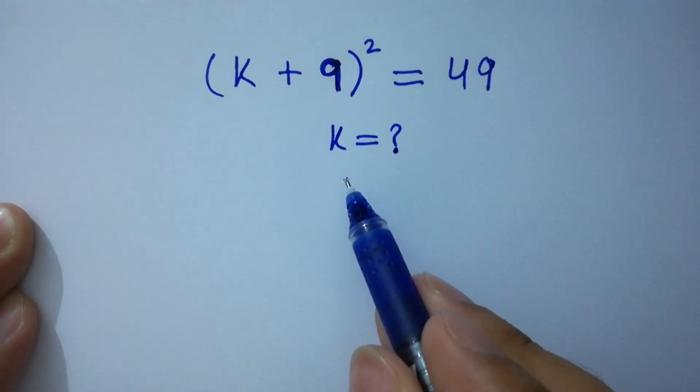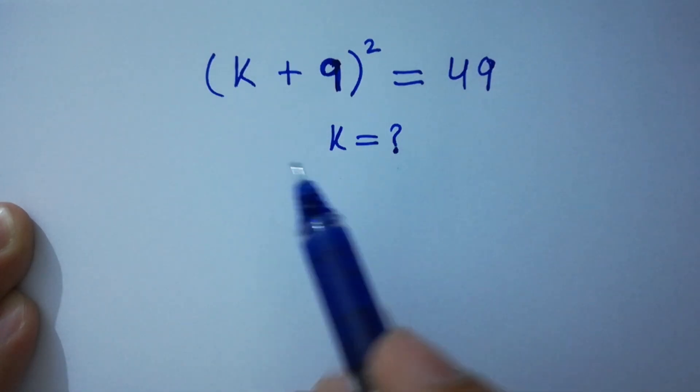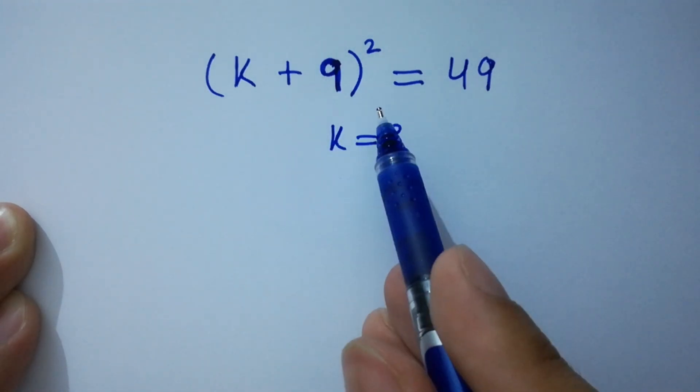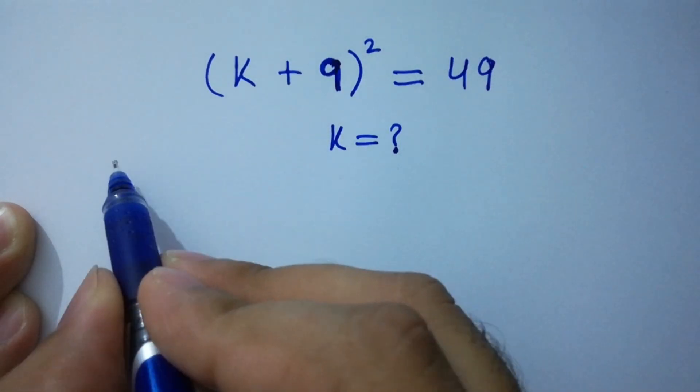Hello friends, find the value of k if (k + 9)² = 49. Let's have a solution.